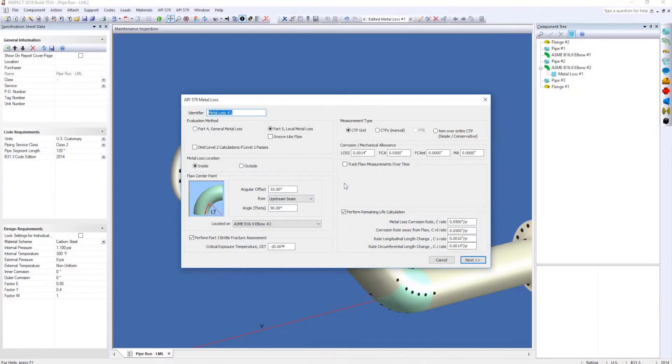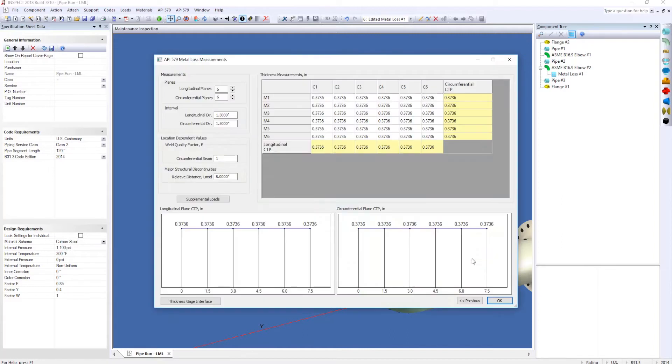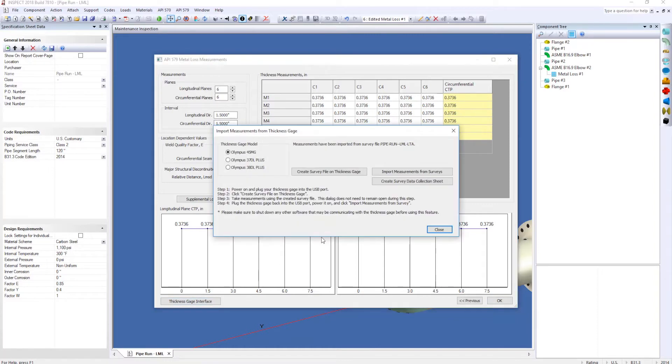I've got other videos showing you how to get this set up. But what we're going to do is go to the second screen here and in the bottom left hand corner there's a button called thickness gauge interface. We're going to click on this and then when the screen pops up you'll choose which Olympus model you want to select, obviously using the 45 MG so we'll default to that. And I'm going to click on the create survey file on thickness gauge. And what this will do is it's going to communicate with the gauge and load this grid onto the gauge.